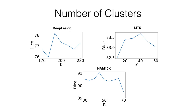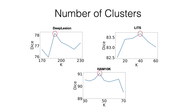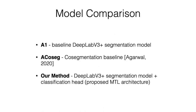Since the model has a parameter k that controls the number of clusters, we check the performance according to an ablation study. The performance reaches a peak with the optimal k. Next, we compare the performance of the baseline DeepLab V3+ segmentation model named A1, the co-segmentation model named ACOSAC, and our proposed multi-task learning architecture named A1 plus MTL.